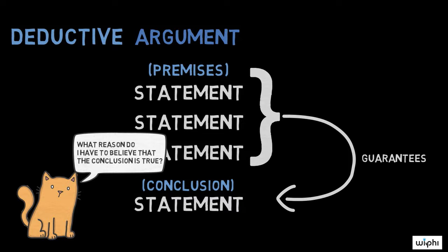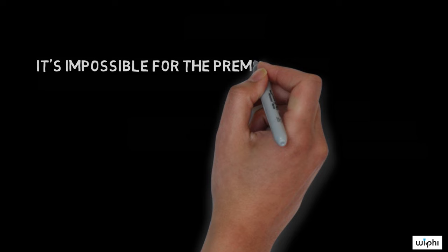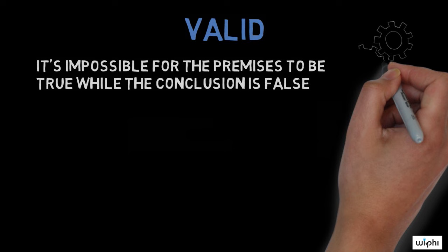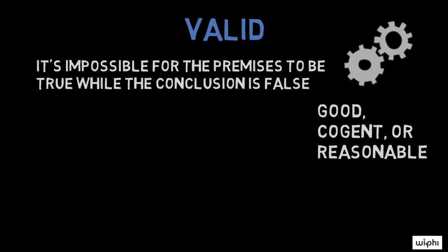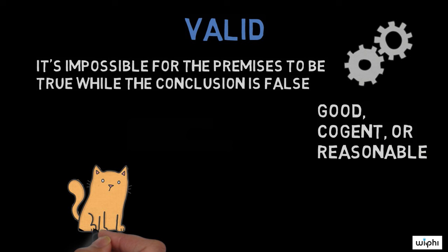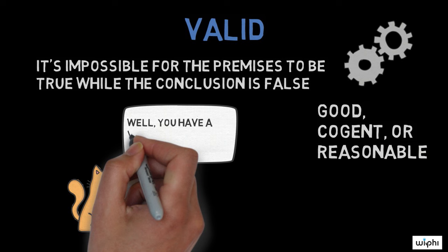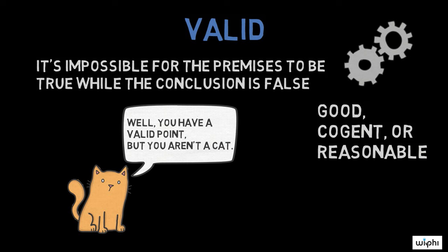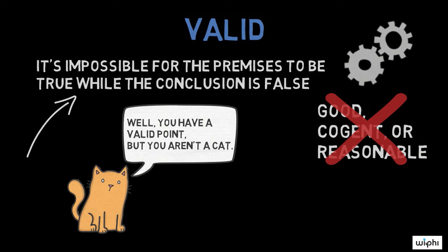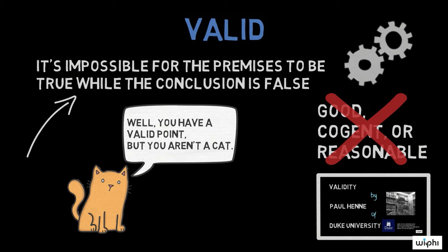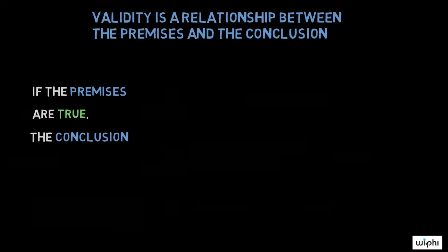A good deductive argument really does guarantee its conclusion. Part of what this means is that it's impossible for the premises to be true while the conclusion is false. When this is the case, we say that the argument is valid. Now, this is a special technical use of the word valid. In ordinary life, we often use this word to mean something like good, cogent, or reasonable — like, 'I guess you have a valid point.' Though that's what the word often means in ordinary life, it's not what the word means here. When philosophers say that an argument is valid, they always mean this very specific thing: that if the premises are true, the conclusion must also be true. To say that an argument is valid is to say something about the relationship between the premises and the conclusion, namely that if the premises are true the conclusion must also be true — but it's not to say that its premises or conclusion are true.